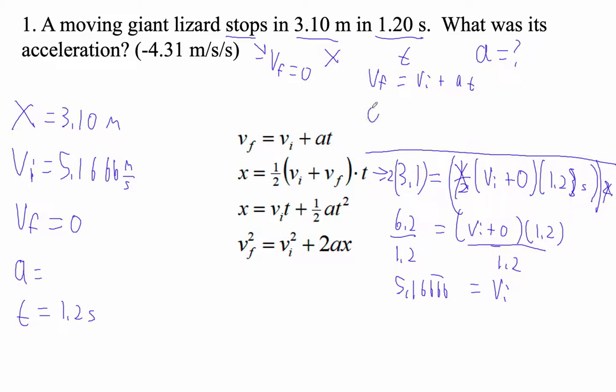So final velocity is 0, is equal to 5.166666, plus acceleration times 1.2.